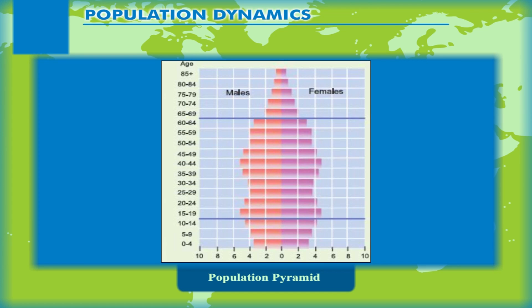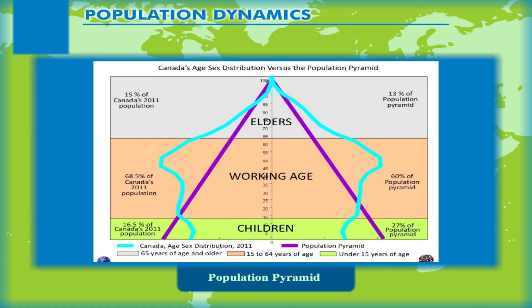In countries like Japan, low birth rates make the pyramid narrow at the base. Decreased death rates enable larger numbers of people to reach old and mature age. The population pyramid also tells us how many dependents there are in a country.